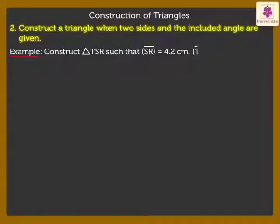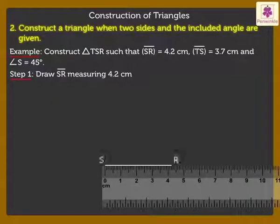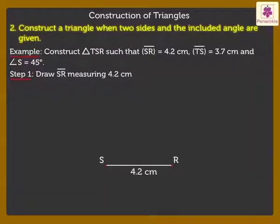Segment TS is equal to 3.7 cm and Angle S is equal to 45 degrees. Step 1. Draw Segment SR measuring 4.2 cm.